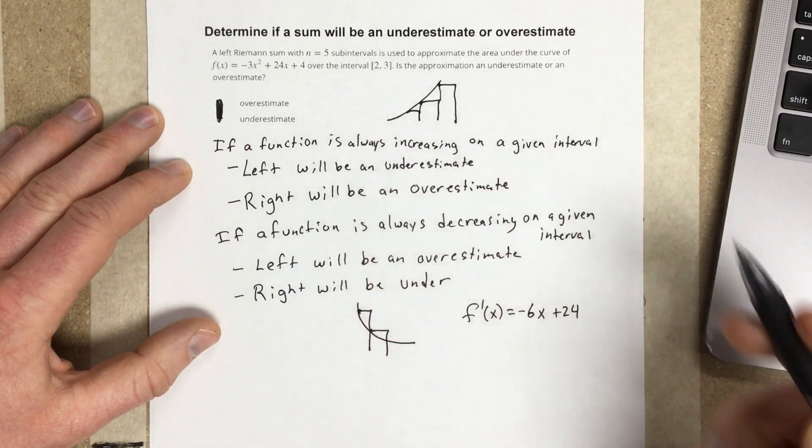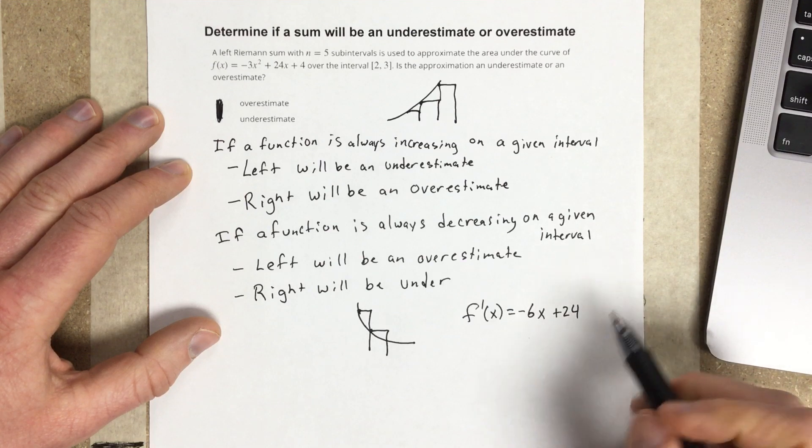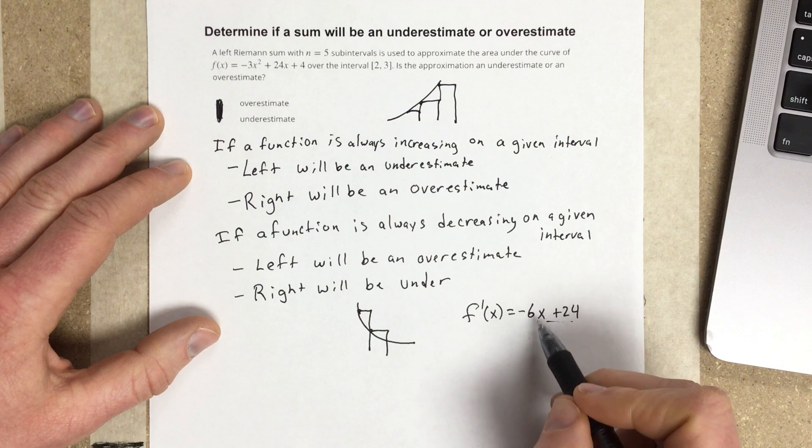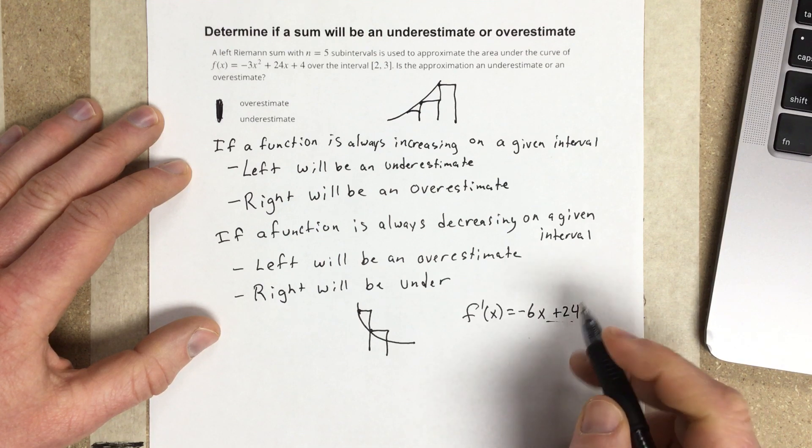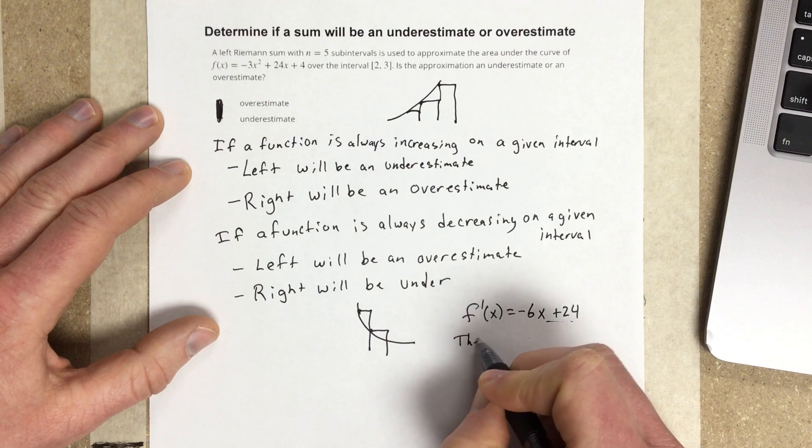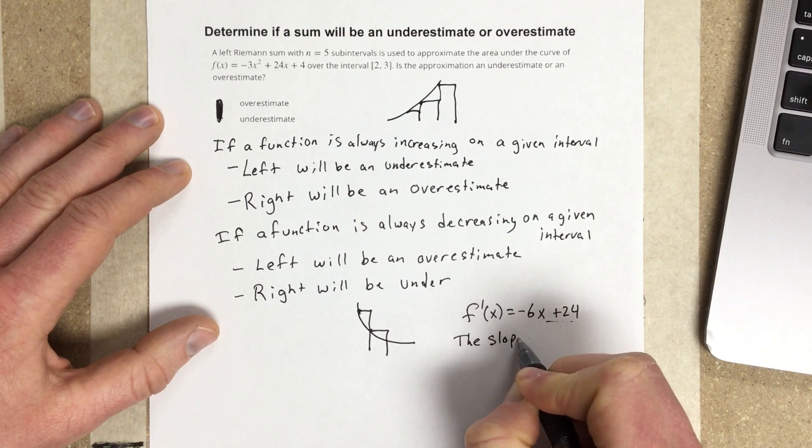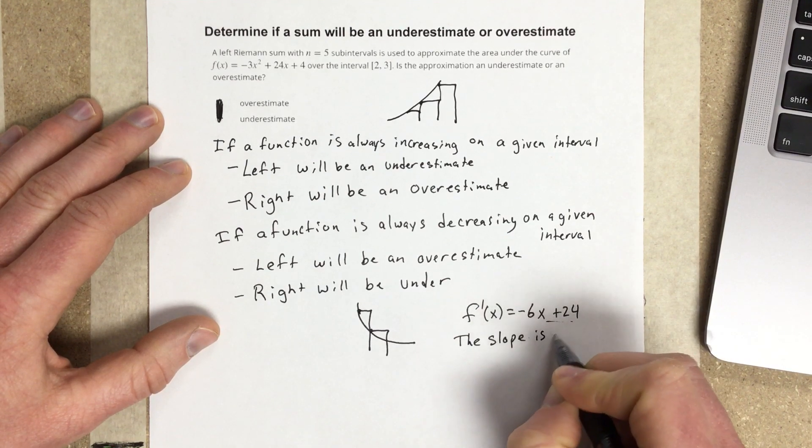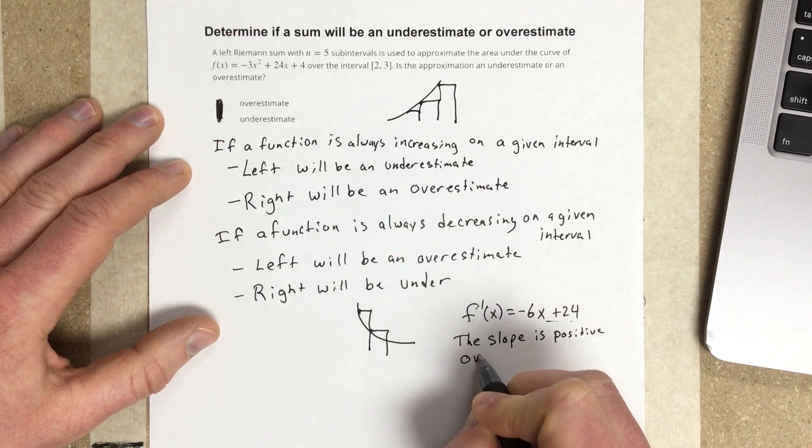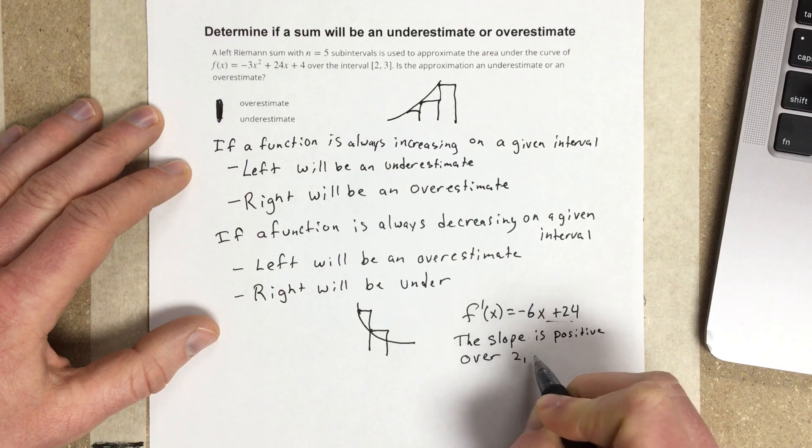Then we plug in 2 and 3 and see, do we get positive or negative numbers? If I plug in 2, I'm going to get a positive number. If I plug in 3, I'll also get a positive number. So the slope is positive over 2 to 3.